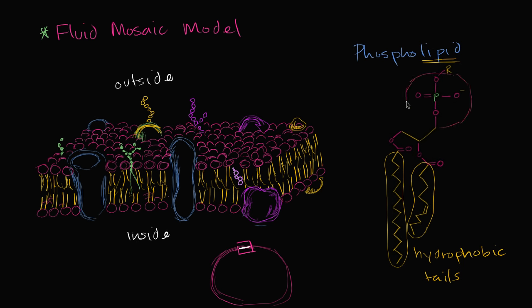You have the phosphate head right over here. And as you can clearly see, this has some charge. Charged molecules do well in polar substances like water. They're going to dissolve well. And so this part right over here is going to be hydrophilic.